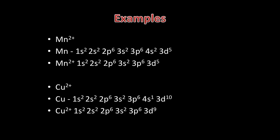Let's do some examples. Mn2+, manganese. The manganese atom has the configuration 1S2, 2S2, 2P6, 3S2, 3P6, 4S2, 3D5. For Mn2+, we take both electrons from the 4S subshell, so the electron configuration is 1S2, 2S2, 2P6, 3S2, 3P6, 3D5. We don't even write the 4S in there.